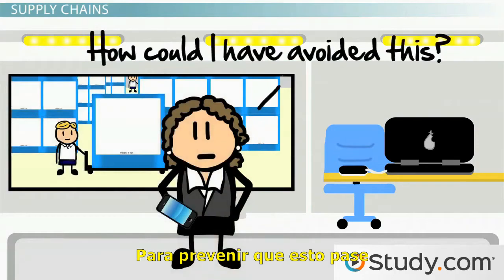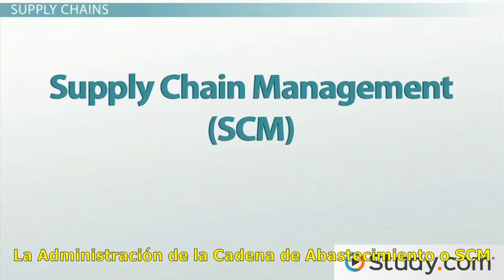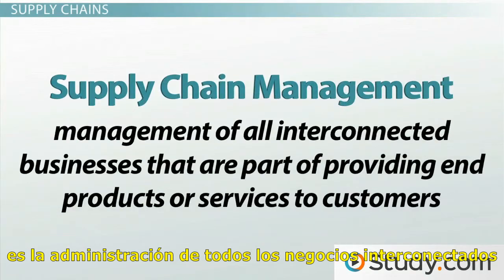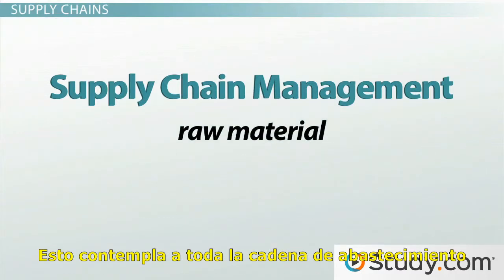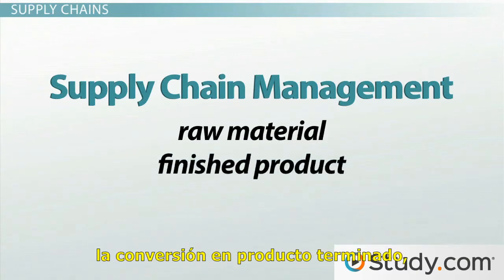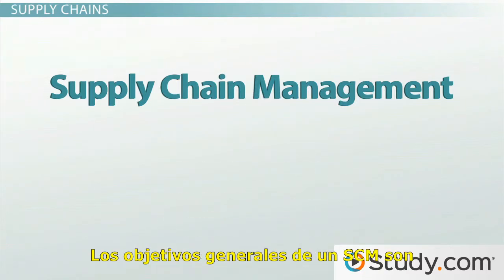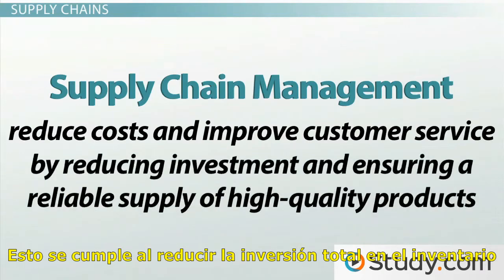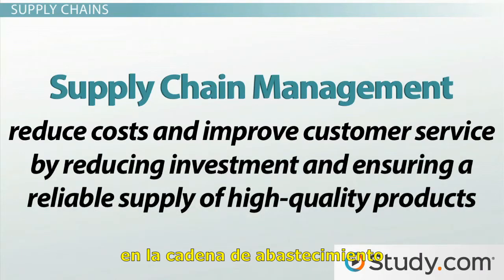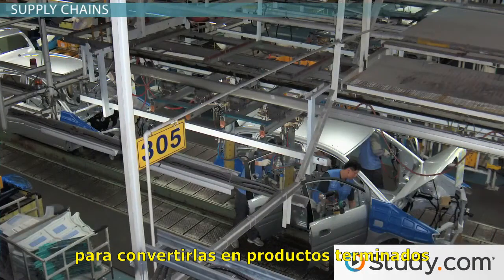To avoid this from happening and to address such problems when they arise, what you need is to manage your supply chain. Supply chain management, or SCM, is the management of all interconnected businesses that are part of providing end products or services to customers. This involves the entire supply chain from acquisition of raw material, conversion to a finished product, transportation, and supplying the final product or service to the end user. The overall goals of SCM are to reduce costs and improve customer service, accomplished by reducing the overall investment in inventory in the supply chain and ensuring a reliable supply of high-quality products to customers.